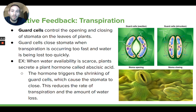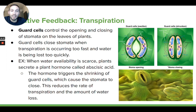The stomata are going to be open or closed depending on these guard cells — specialized cells that form the stomata opening. Guard cells can either swell up with water, allowing the stomata to be open, or lose water and start to close. So you can have open or closed stomata depending on what these guard cells are doing. When you look at a leaf, sometimes a lot of stomata will be open and sometimes many will be closed, depending on how fast the plant is doing transpiration.